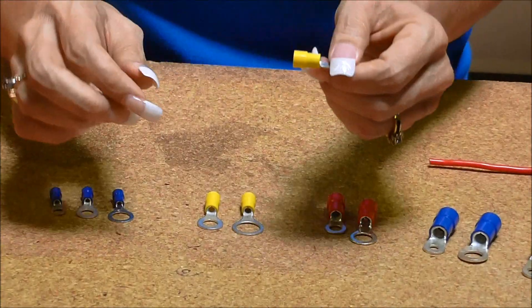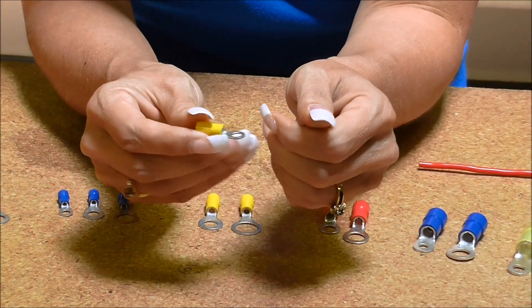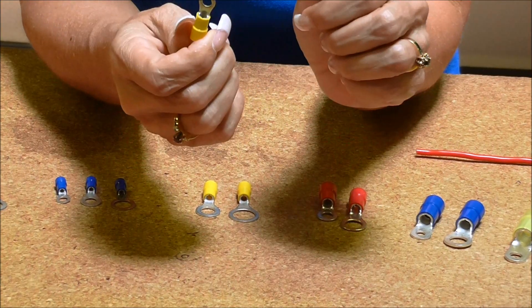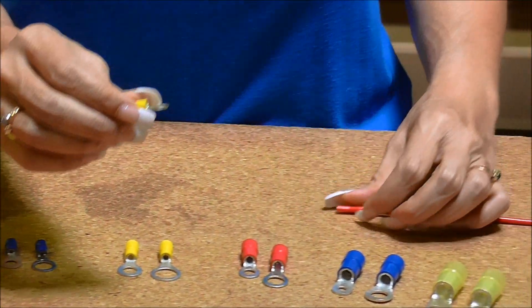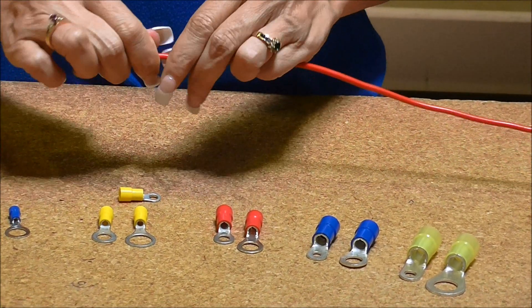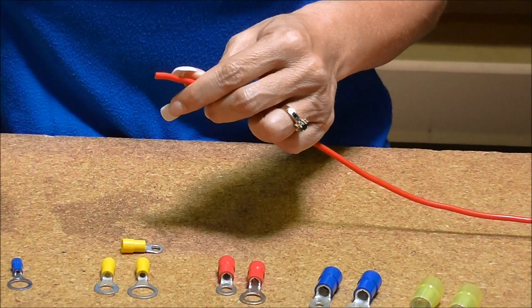This is a 10 to 12 gauge, number 10 ring terminal. And we are going to crimp it. I've got 10 gauge wire.